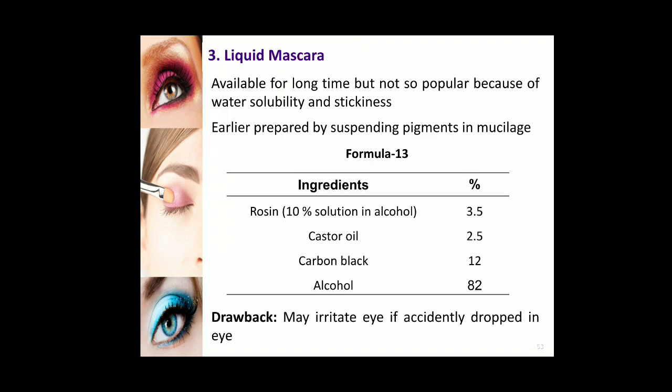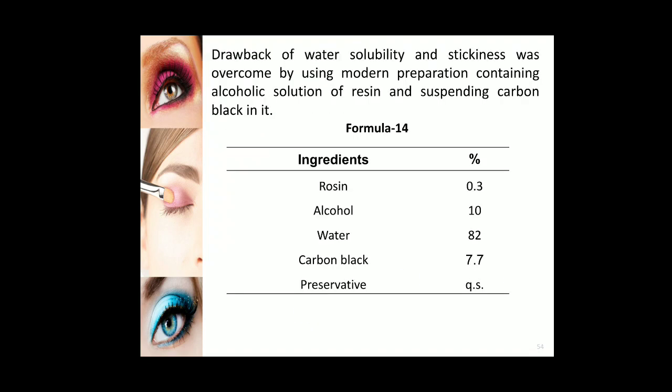Liquid base mascaras are a suspension of colouring matter in a mucilage of gelatin, acacia, and tragacanth. They are more popular nowadays and are available in automatic mascara tubes containing a round brush inserted through a small aperture to remove a metered amount of product. They are available in both water resistant and water soluble forms, though they have been available for a long time but were not popular due to water solubility and stickiness. This drawback can be overcome by using modern preparations containing an alcoholic solution of resins suspending carbon black.